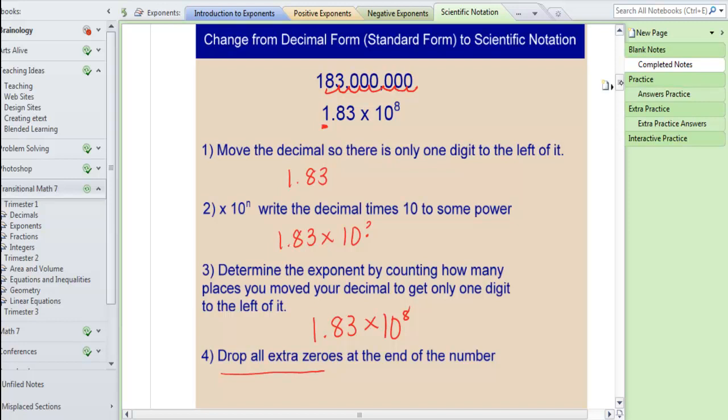So let's think about why this works. 1.83 times 10 to the 8th actually means 1.83 times 1 with 8 zeros after it. Now when you multiply 1.83 times 100 million, you are going to end up moving the decimal in 1.83 those 8 places.